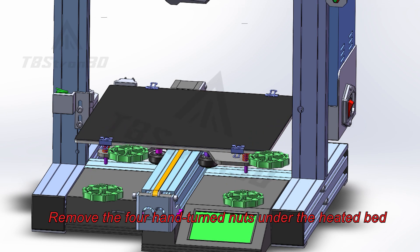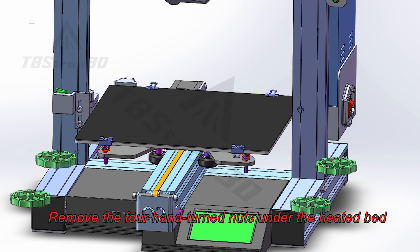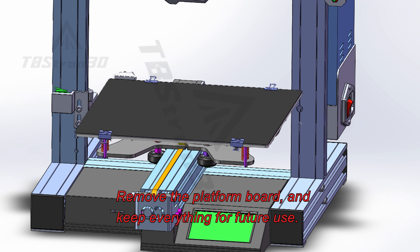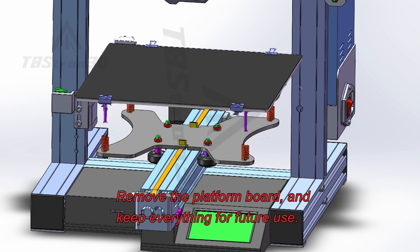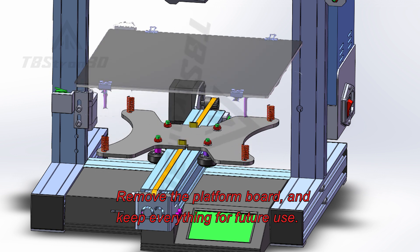Remove the four hand-turned nuts under the heated bed. Remove the platform board and keep everything for future use.